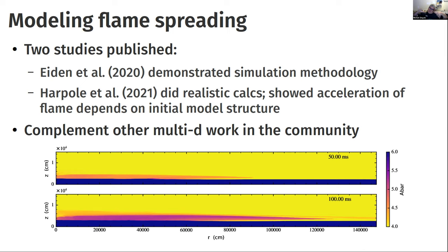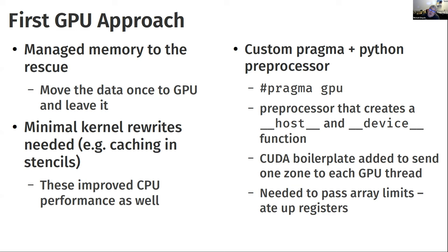Castro benefited from GPU hackathons organized by OLCF. The first approach was to leverage managed memory to handle data movement automatically, migrating kernels to the GPU piece by piece with minimal kernel rewrites. At the time, all compute kernels were in Fortran while the outer memory management and parallelism from AMReX was in C++. A Python preprocessor was written to detect a GPU pragma and write boilerplate offloading code at compile time.